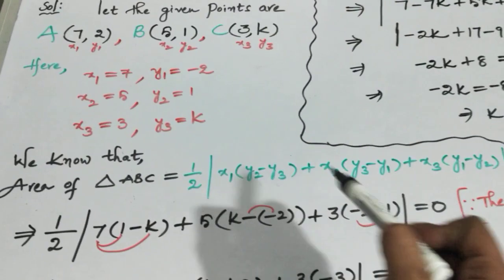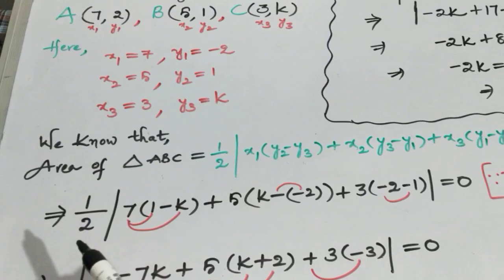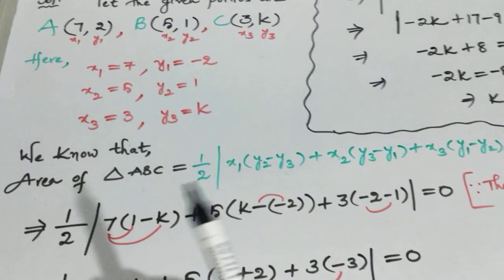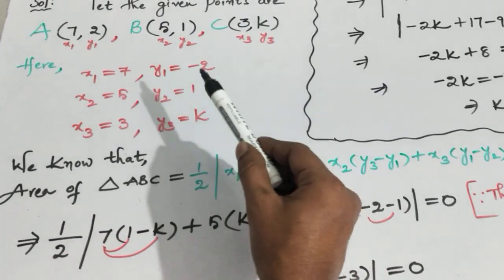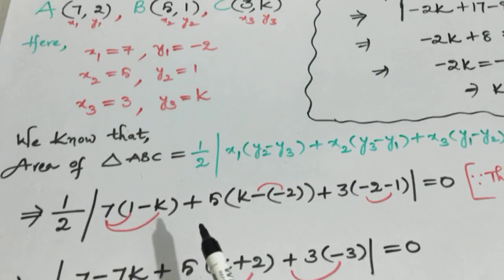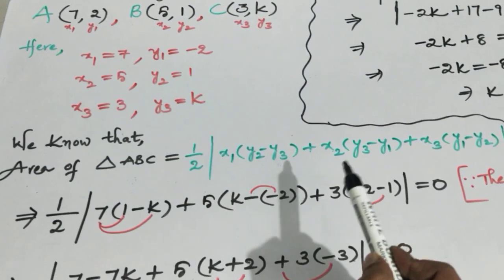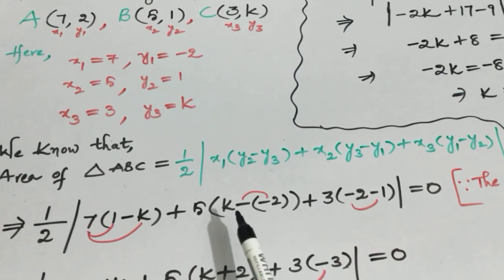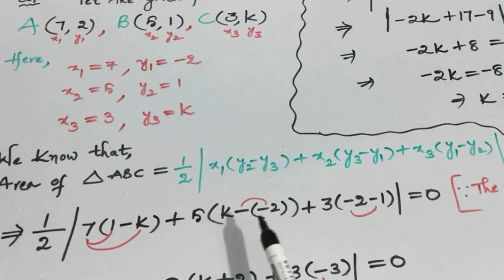Now substitute the values into the formula. That gives: half times modulus of 7(1 - k) + 5(k - (-2))... Opening the bracket for x2=5: y3 minus y1 is k minus (-2). Minus into minus becomes plus 2.